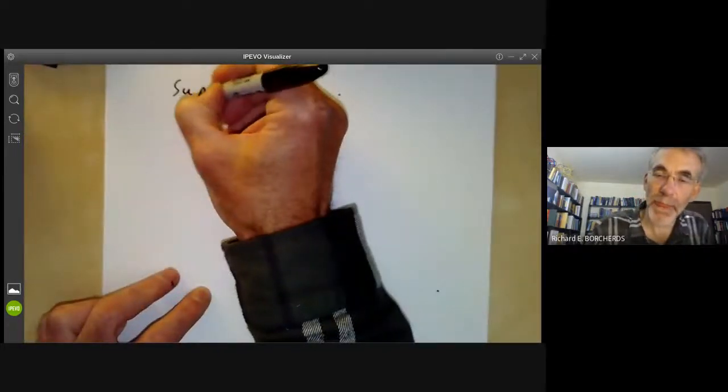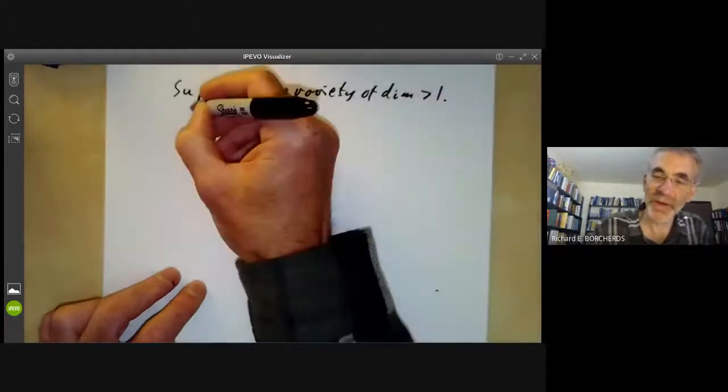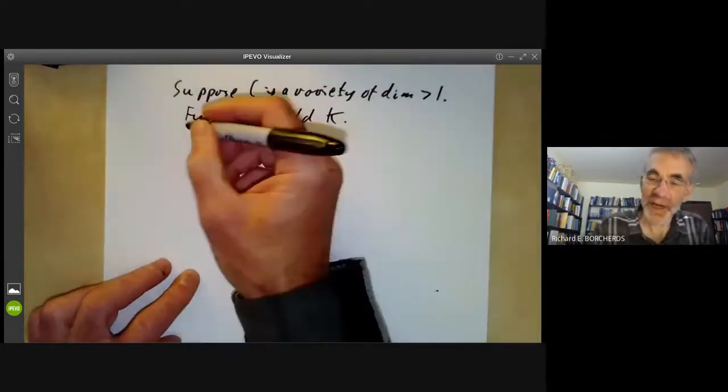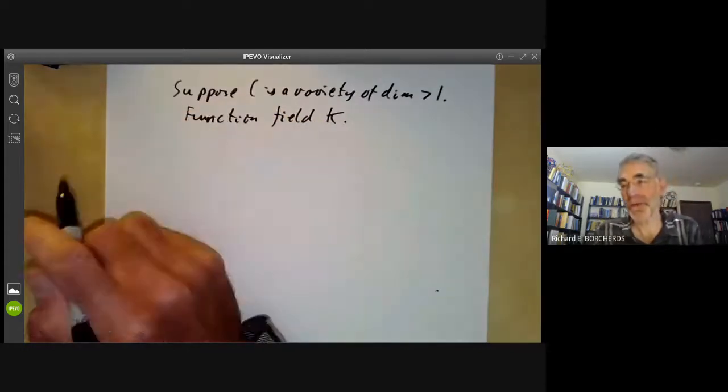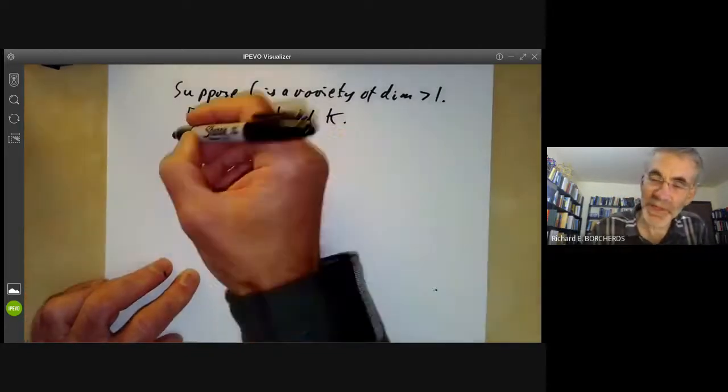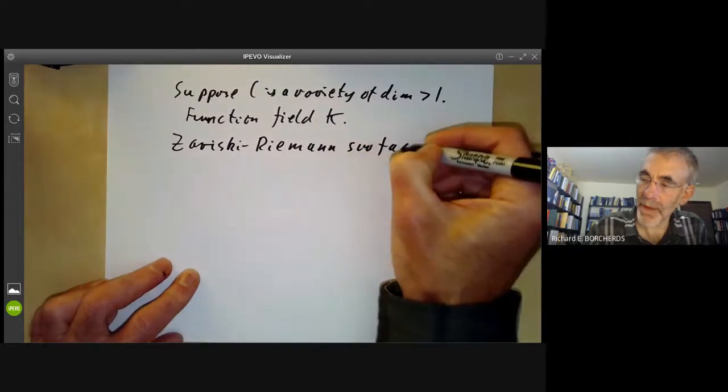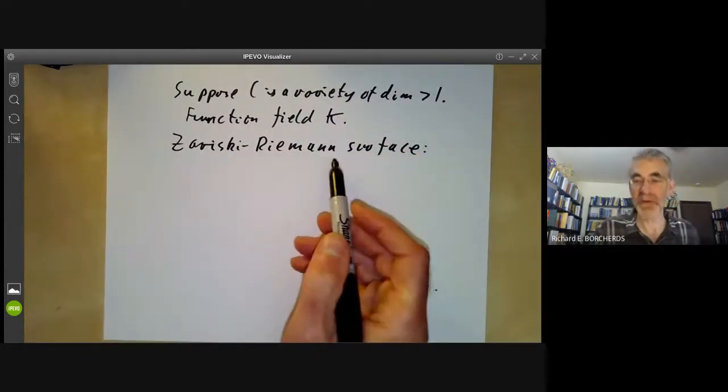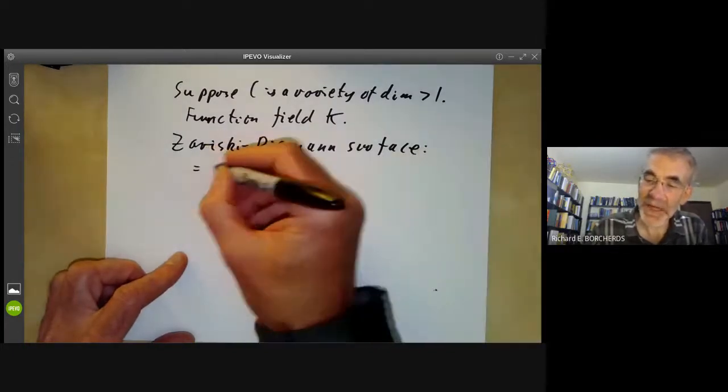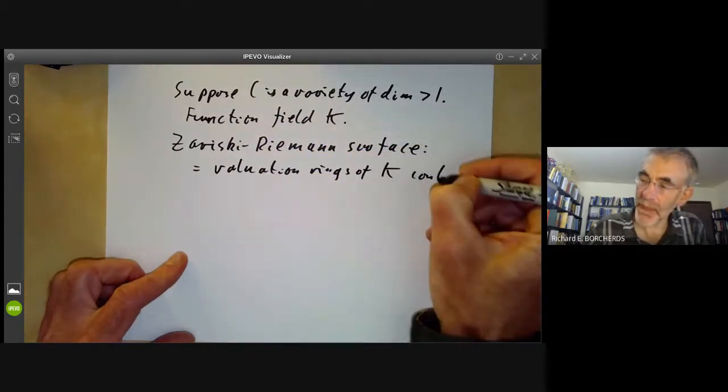And you can ask, what happens if you do this for a higher dimensional variety? So suppose C is a variety of dimension greater than one with function field K. And what Zariski did was he defined something, well, he rather confusingly called it a Riemann surface, but it's not a surface at all in general, and it had very little to do with Riemann. So it's sometimes now called a Zariski Riemann surface. This is the set of valuation rings of big K containing little k.